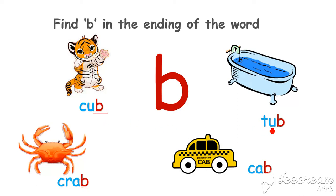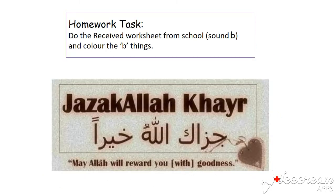Now let's look for B in the word 'tub'. Well done — here is a B sound. Good job! Now let's look for B in the word 'cab'. Good job! Well done. Now this is your homework task: do the received worksheet from school — sound book — and color the bird things. Jazakallah, dear friends. Allah Hafiz. Take care. Bye-bye.